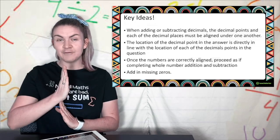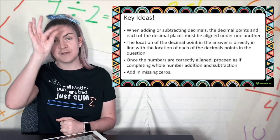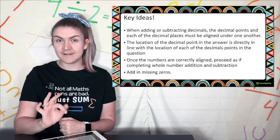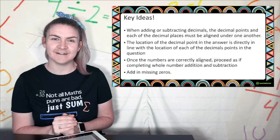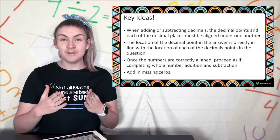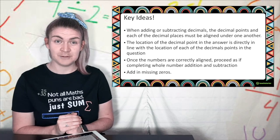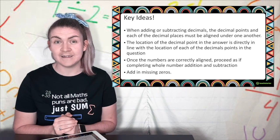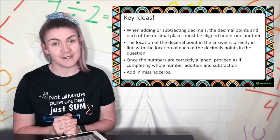If all our decimals are in a row then when we're doing the answer we just put a decimal point in the answer in the exact same spot in the line. Once we've lined them all up we just add and subtract like normal. The only thing is we've got to add in missing zeros and I'll show you that in a moment.